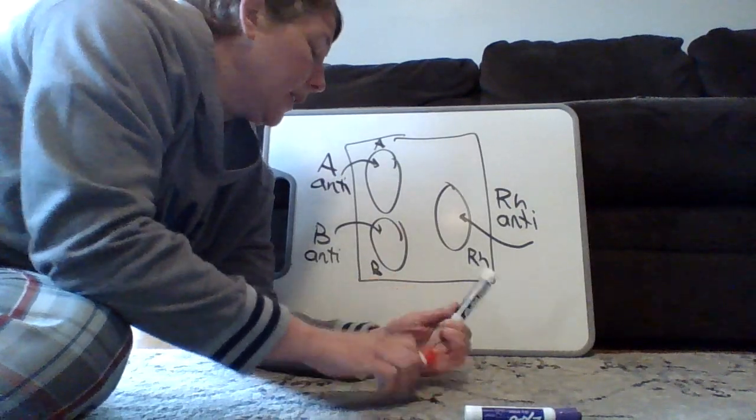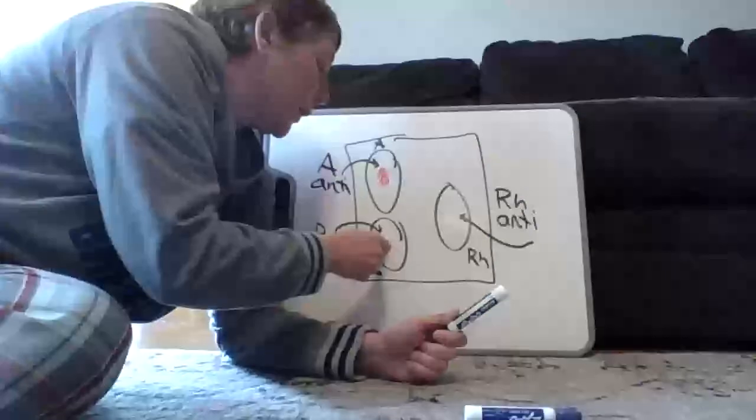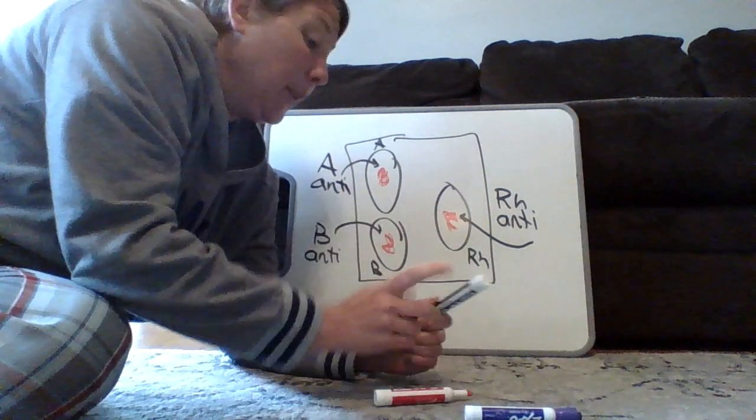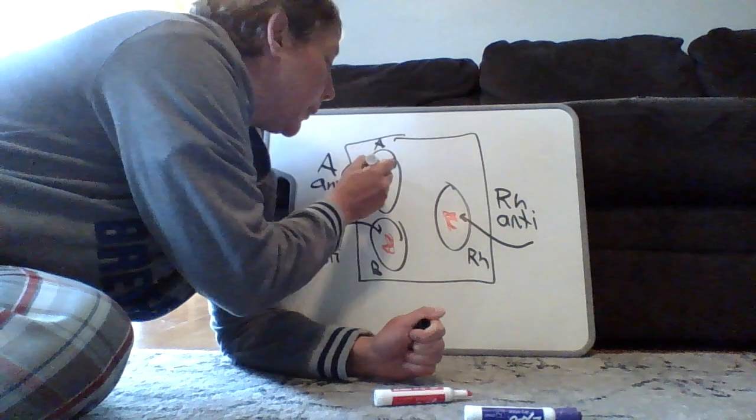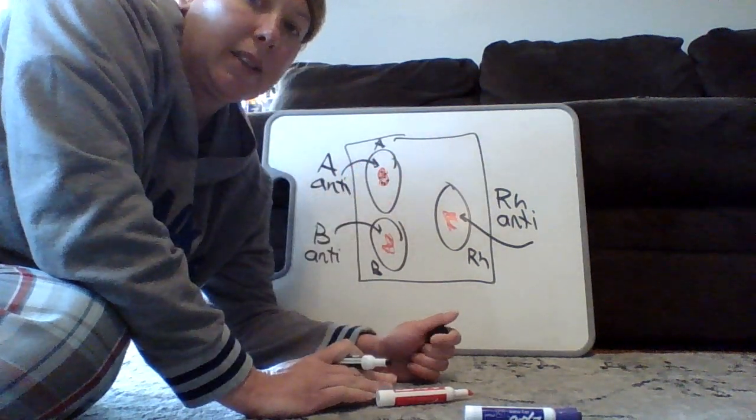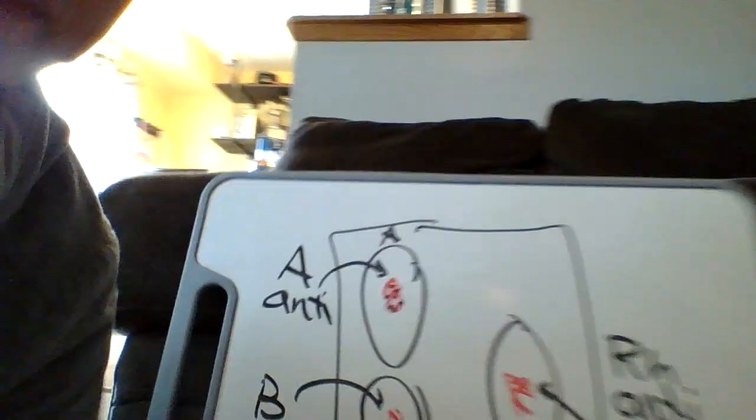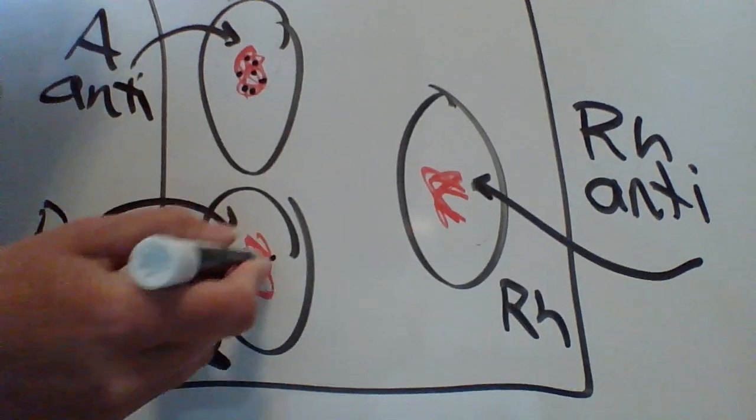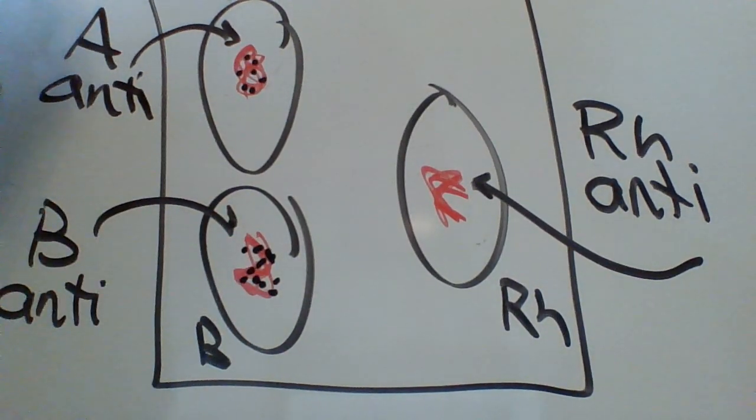So this is, I shouldn't have erased it. So ignore that. I'm going to put the blood back in there. Say we end up getting clumps in our A antigen. And I don't know if you can see that. So I'll bring that closer. So there are clumps and there are clumps in our B, but no clumps in our RH.